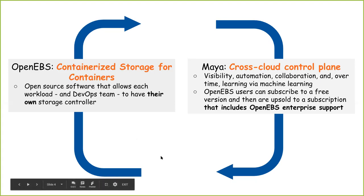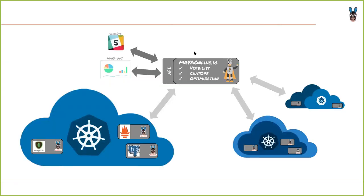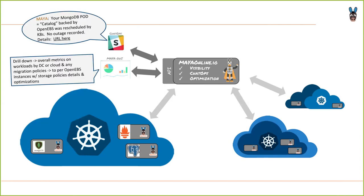Maya also gives you some chat ops controls, and we're going to demo its ability to orchestrate cross-cloud data mobility for stateful workloads. We're about a year into the open sourcing of Open EBS — it was early 2017 that Open EBS was open sourced by a team who have been doing containerized storage for years, previously on OpenBSD. We decided to containerize storage for containers, putting the controller next to the workload in a more modern approach with open source Docker and Kubernetes.